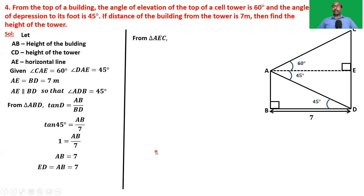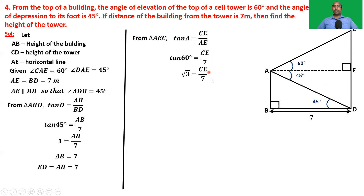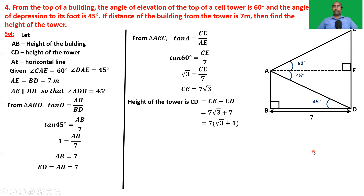From triangle ACE: tan A = opposite/adjacent = CE/AE. We know AE = BD = 7. Angle A = 60 degrees, so tan 60 = CE/7, giving root 3 = CE/7, therefore CE = 7√3. Now the height of the tower CD = CE + ED = 7√3 + 7 = 7(√3 + 1).